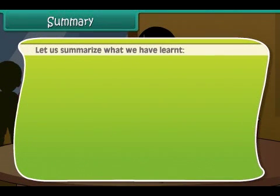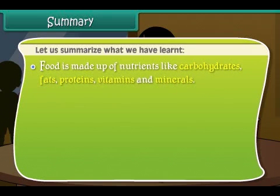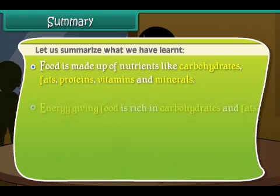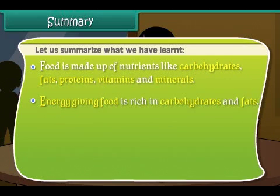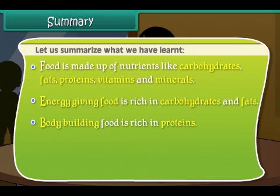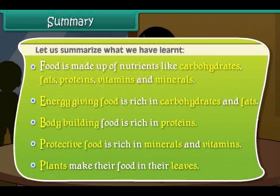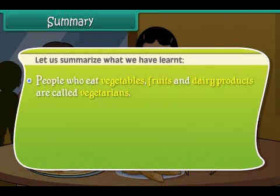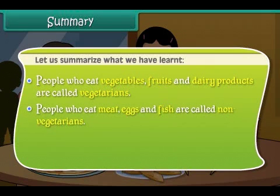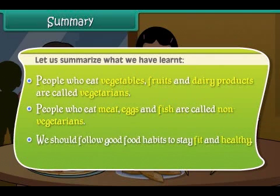Food is made up of nutrients like carbohydrates, fats, proteins, vitamins and minerals. Energy giving food is rich in carbohydrates and fats. Body building food is rich in proteins. Protective food is rich in minerals and vitamins. Plants make their food in their leaves. People who eat vegetables, fruits and dairy products are called vegetarians. People who eat meat, eggs and fish are called non-vegetarians. We should follow good food habits to stay fit and healthy. Thank you.